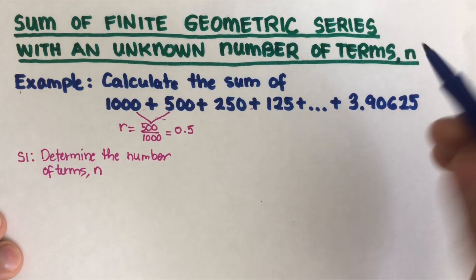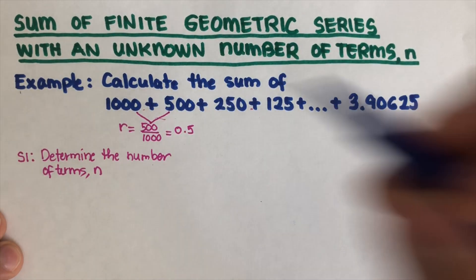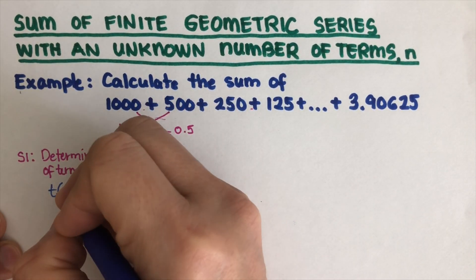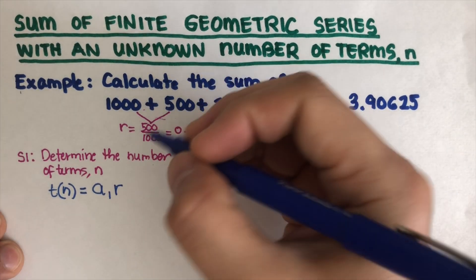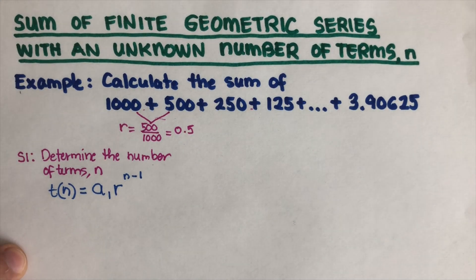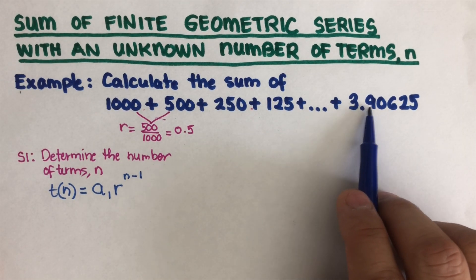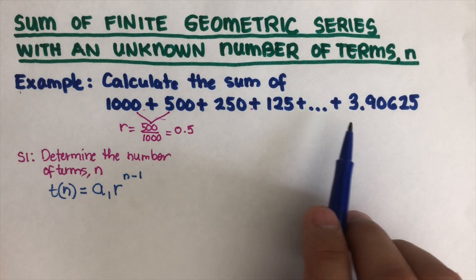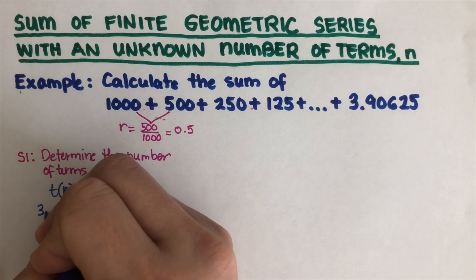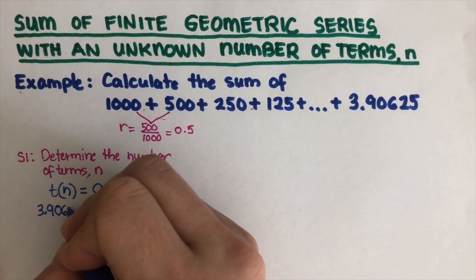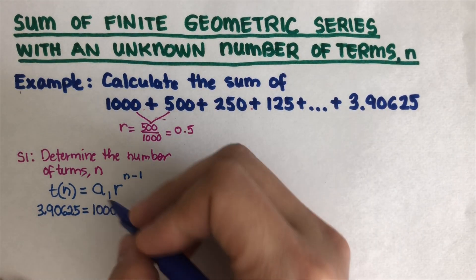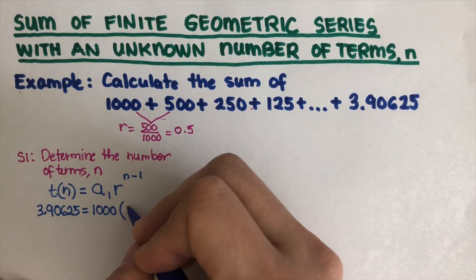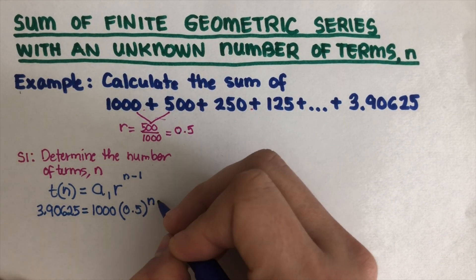Step 1: Determine the number of terms n. We use the equation for the nth term of a geometric sequence: t(n) = a₁ · r^(n−1). In this problem, the last term is 3.90625, so we write: 3.90625 = 1000 · (0.5)^(n−1). We don't know what n is, so we keep it as n minus one in the exponent.